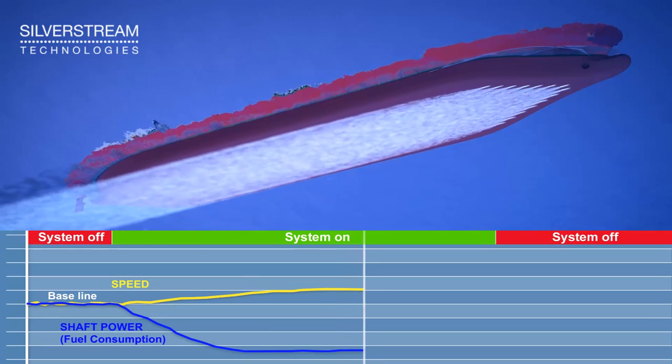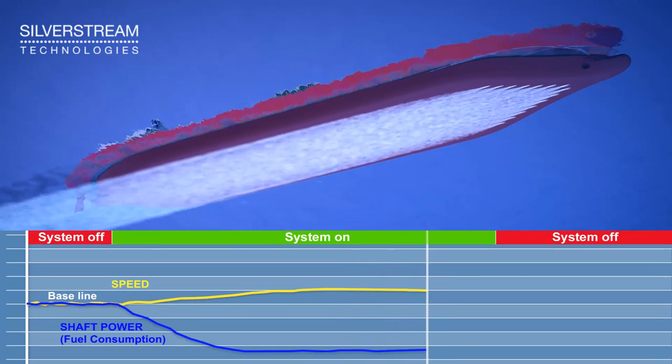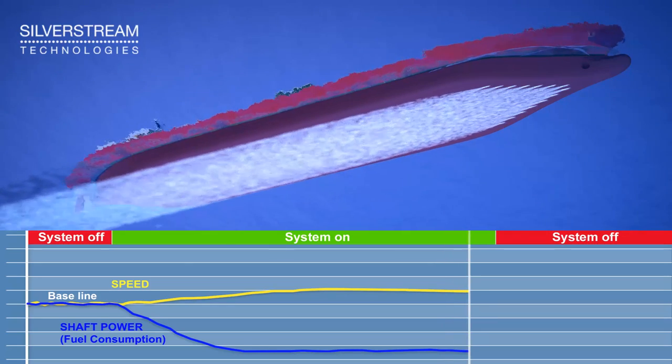When the system is turned on, an immediate drop in shaft power can be seen, followed by an increase in speed.